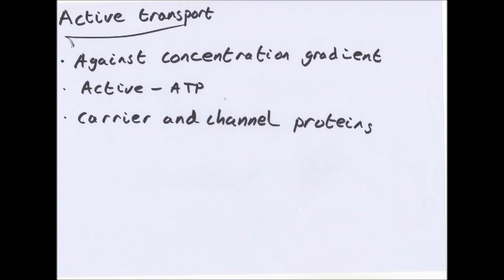Active transport is against a concentration gradient, going from an area of low concentration to an area of high concentration. Active transport requires ATP, which is energy. These always use carrier and channel proteins.